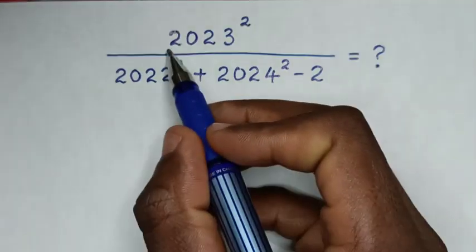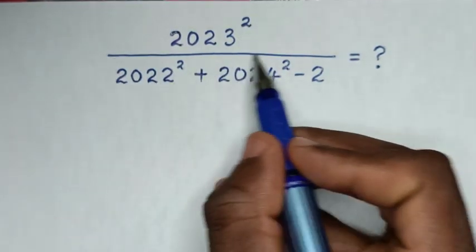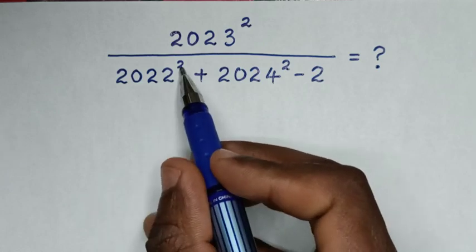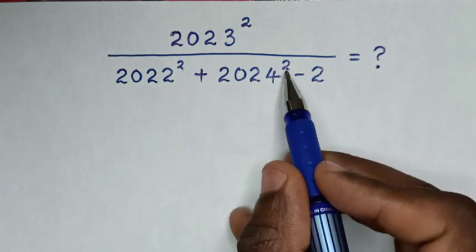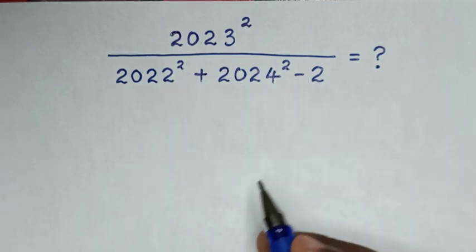Hello, how to solve 2023 square over 2022 square plus 2024 square minus 2.